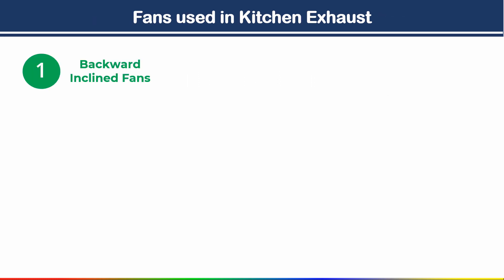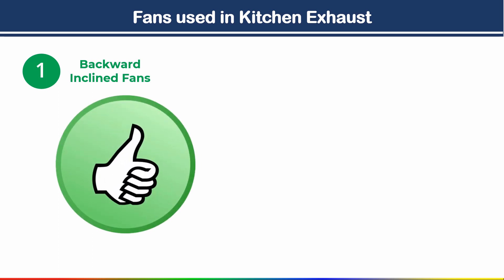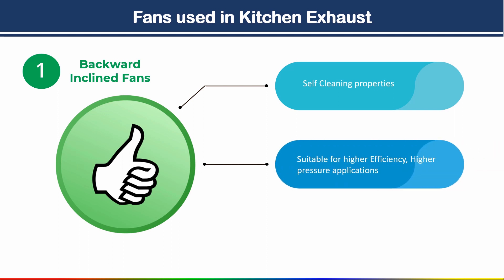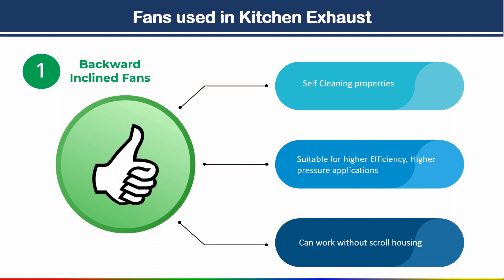Now let's see the fans used in kitchen exhaust systems. We generally use backward-inclined fans. The advantages of backward-inclined fans are: first, they have self-cleaning properties; second, they are suitable for higher efficiency and higher pressure applications; and third, they can work without scroll housing.